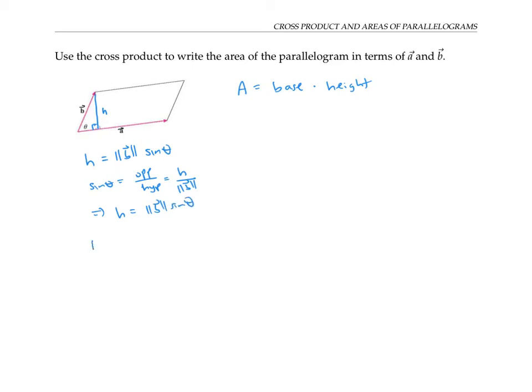Also, the length of the base is just the length of vector a. Therefore, the area is the length of a times the length of B sine theta. Well, that's just the same thing as the magnitude of a cross B. So the area of a parallelogram is given by the magnitude of the cross product of the two vectors that span it.